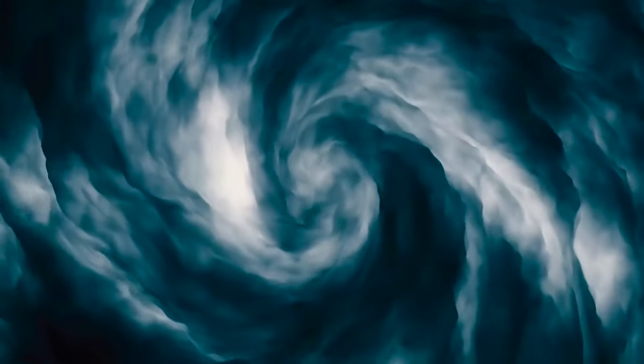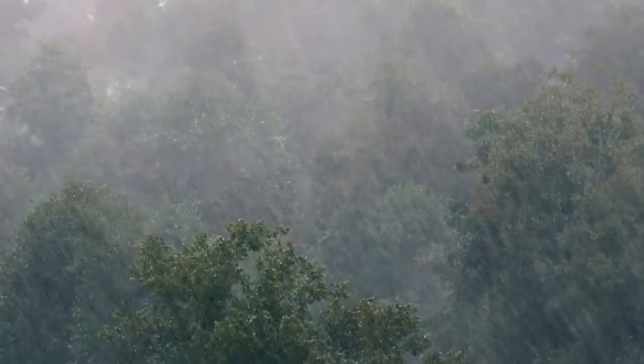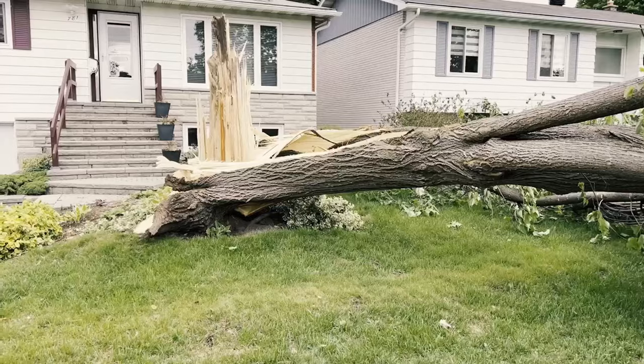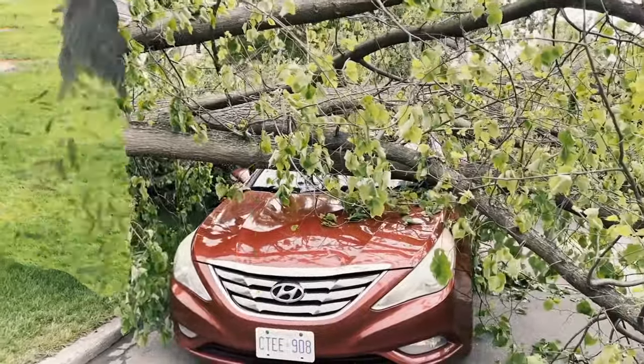Downbursts are powerful winds that come down from a thunderstorm. Once they hit the ground, they spread out very quickly. These winds are dangerous, since they can cause a lot of damage. Even though they're often confused with tornadoes, downbursts are a totally different phenomenon.